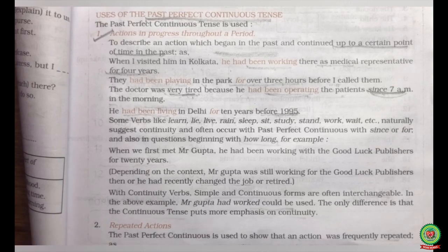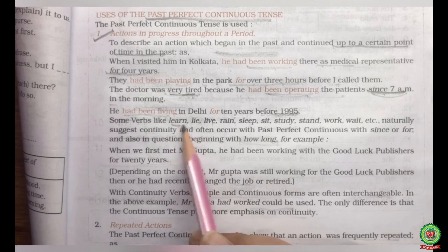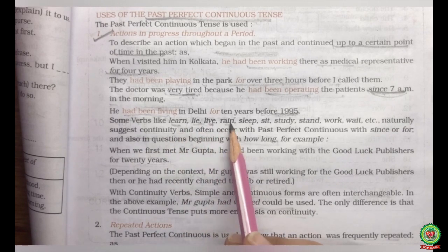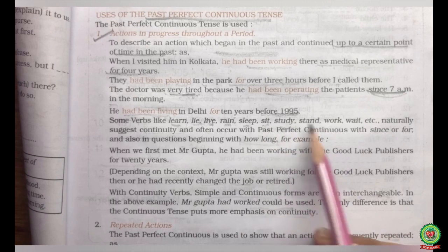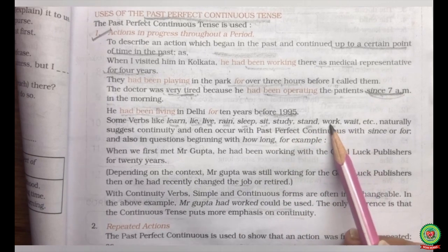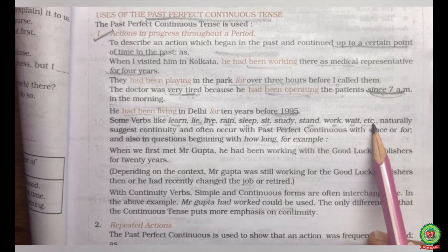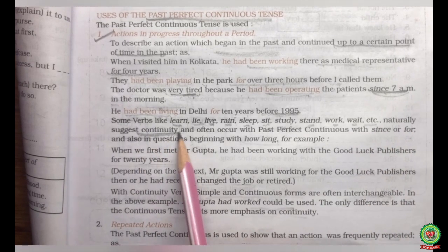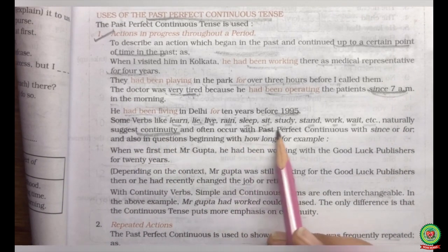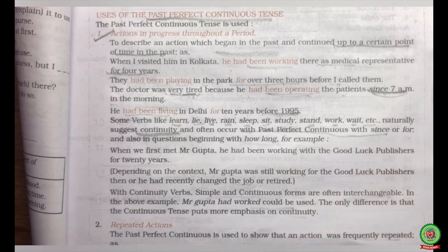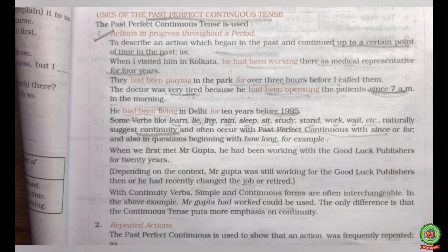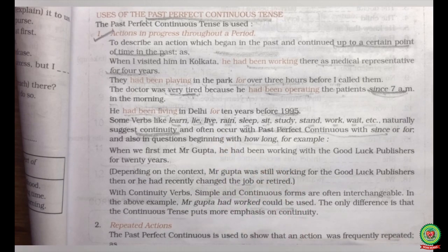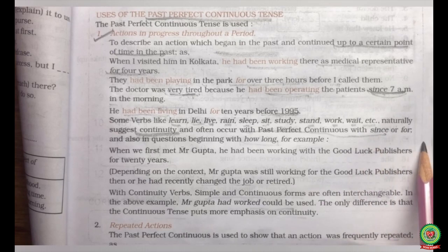Some verbs like learn, lie, live, rain, sleep, sit, study, stand, work, wait, etc. naturally suggest continuity and often occur with the past perfect continuous tense with 'since' and 'for.' These words naturally describe the continuity of a sentence, so with sentences using these verbs we normally use the past perfect continuous tense with 'since' and 'for.'